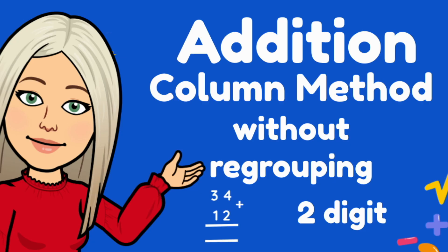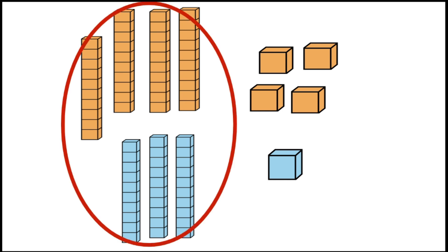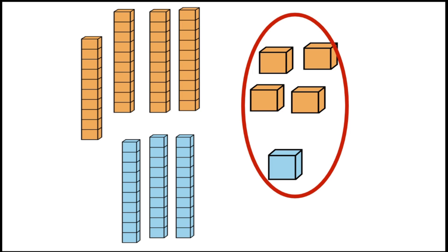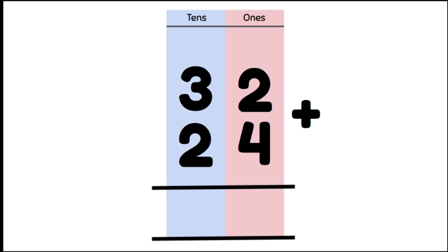Two-digit addition using the column or algorithm strategy. Addition is working out the total number of something we have all together. When we're dealing with bigger numbers, an easy way to work out our solution is to group our numbers into tens and ones. We can use the column method to do this grouping for us and make our calculations simpler.